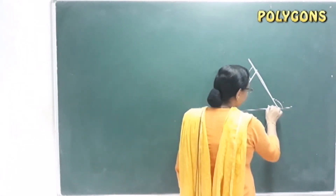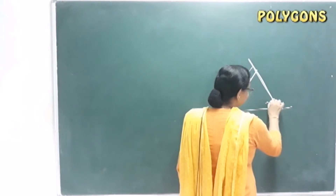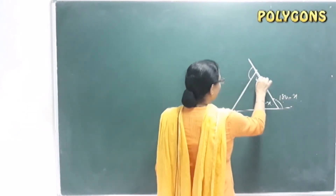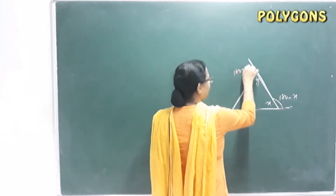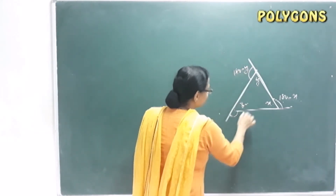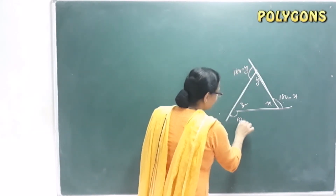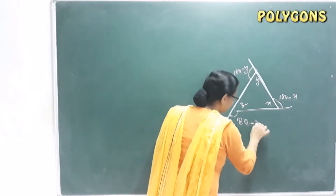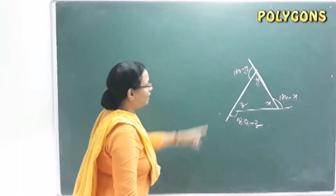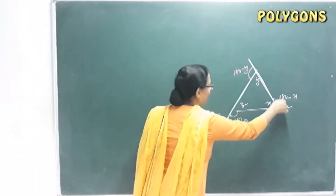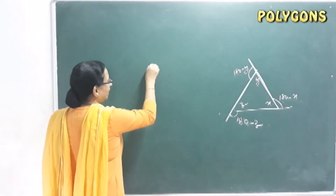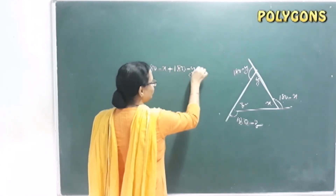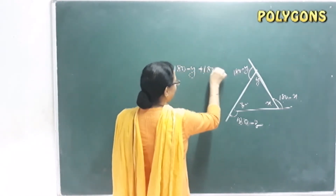Why is it 360 degrees? If the interior angles are x, y, and z, then the exterior angles are (180 − x), (180 − y), and (180 − z). We add all the outer angles: (180 − x) + (180 − y) + (180 − z).